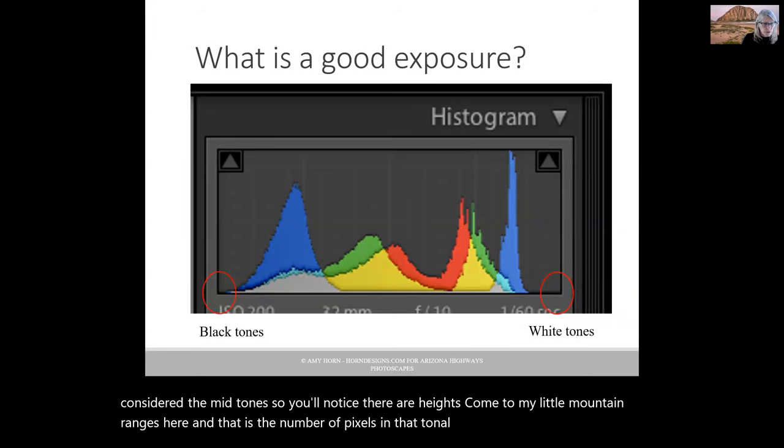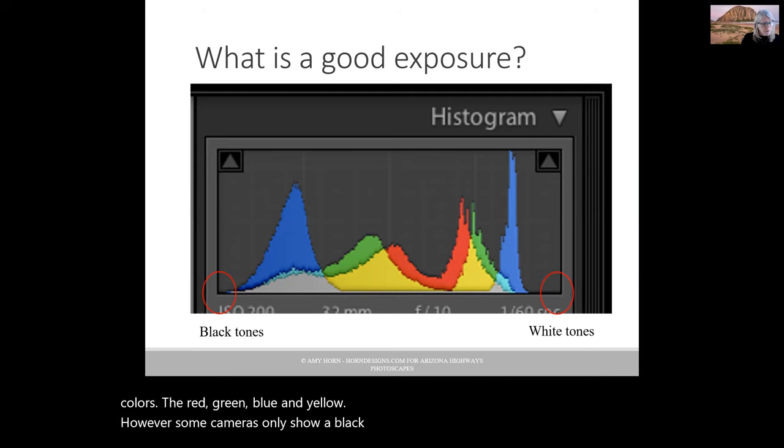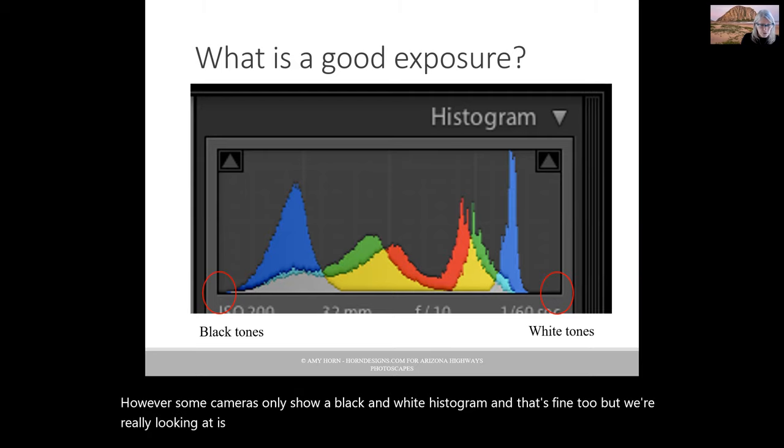This particular histogram has multiple colors: red, green, blue, and yellow. However, some cameras only show a black and white histogram, and that's fine too. What we're really looking at is that left to right shift and seeing how well it represents the image that we've shot.